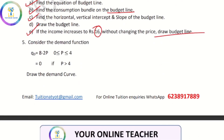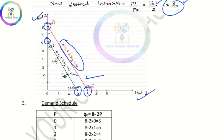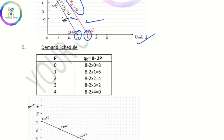The next question: we have a demand function. We have a demand curve. That is demand equals 8 minus 2p. We have a demand schedule. The price is the equation 8 minus 2p.